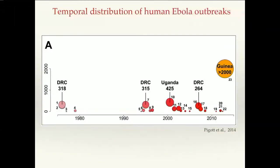If you look at the temporal distribution of the 23 outbreaks observed in Africa, you can see there are some gaps between consecutive outbreaks. The first cluster in Sudan and Congo was observed in the late 70s, then for 15 years no outbreaks occurred. Then more in the mid-90s in DRC, Congo, and Gabon, then Uganda, then Congo and Gabon again, and a new cluster more recently. There are long periods during which there are absolutely no human outbreaks.